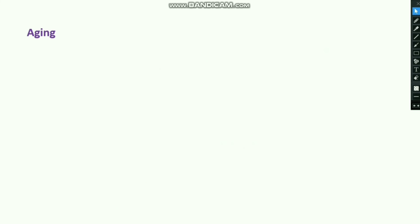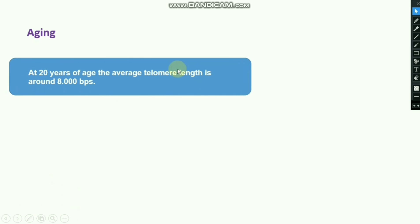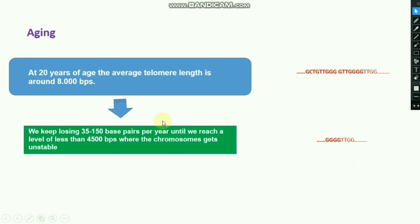Now I am going to talk about aging, which is closely related to the telomere. At 20 years of age, the average telomere length is around 8,000 base pairs, and over time the telomere sequence gets shorter and shorter. We keep losing 35 to 150 base pairs per year until we reach a level of less than 4,500 base pairs, where the chromosome gets unstable.